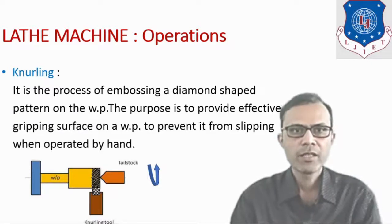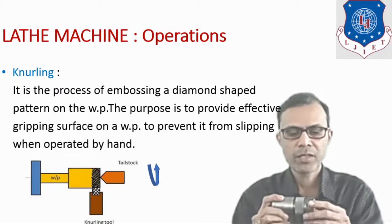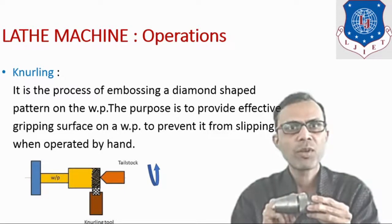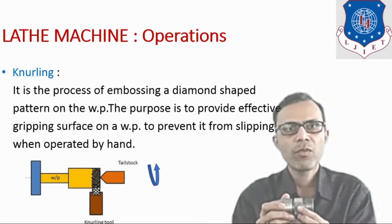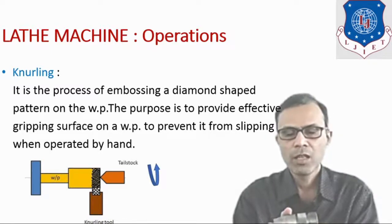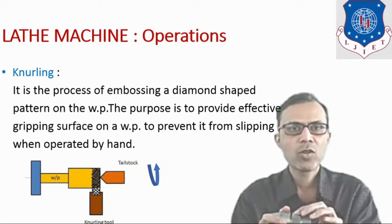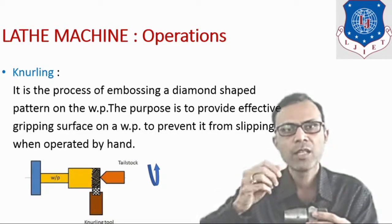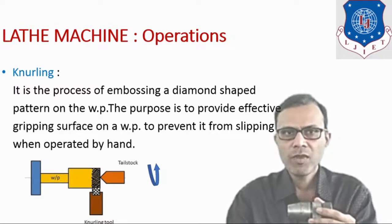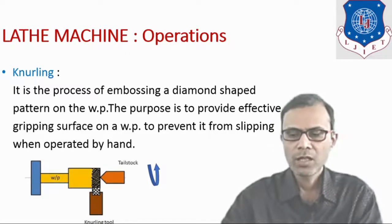The next operation is the knurling operation. It is the operation to emboss a diamond-shaped pattern on the workpiece. Here you can see the surface which is produced by the knurling operation. The purpose is to provide an effective gripping surface so there will be no slippage when we hold it. For example, the ratchet screw of a micrometer is provided this kind of surface, so when we hold and rotate it there will be no slippage. When we perform knurling, the speed of the machine tool is reduced as compared to other operations.